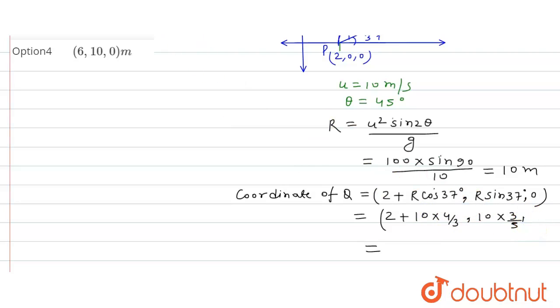10 cos(37°) equals 40/5 equals 8, so 2 plus 8 equals 10, and y equals 30/5 equals 6, and z equals 0. So the coordinates will be (10, 6, 0).